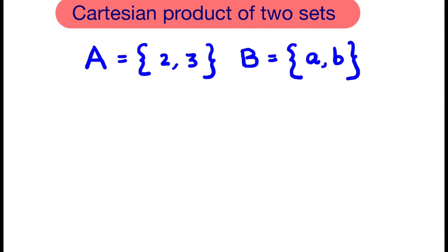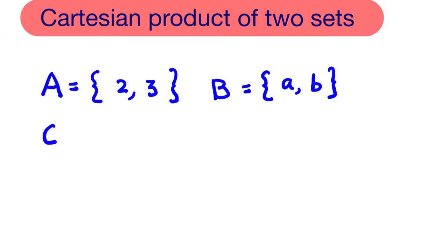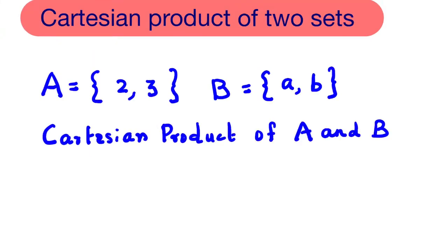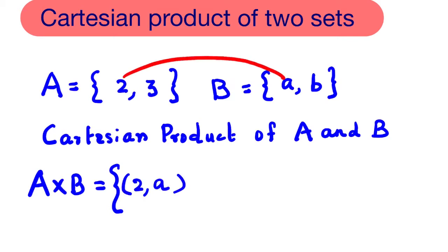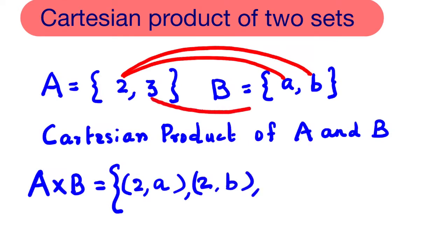Cartesian product of A and B is denoted as A cross B, which is equal to the set of all ordered pairs: (2,A), (2,B), (3,A), (3,B).